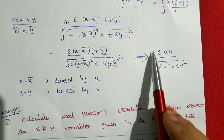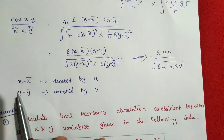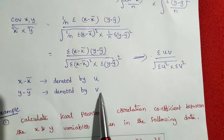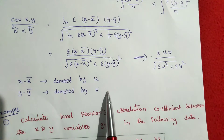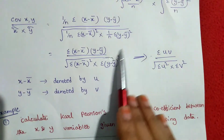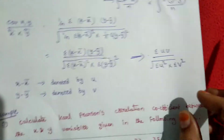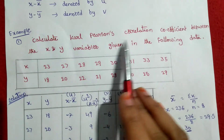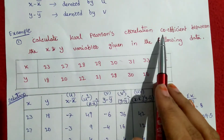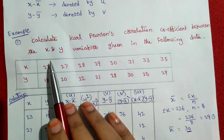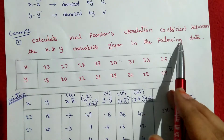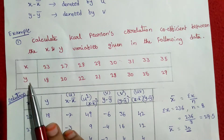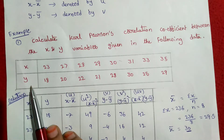So in the example, note this simple formula: x minus x-bar is denoted by u, and y minus y-bar is denoted by v. This formula will be used. Here is an example problem: calculate Karl Pearson's correlation coefficient between the x and y variables given in the following data.